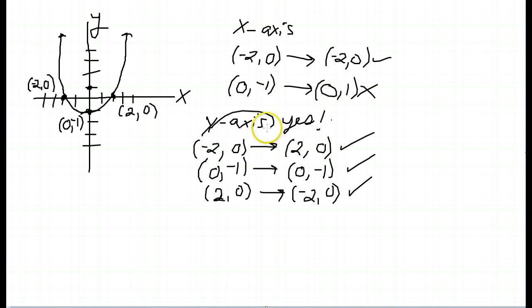Now, testing with respect to the origin. We just change the sign of both x- and y-coordinates. So, we start with our negative 2, 0. If I change the sign of both coordinates, we have 2, 0, and that one checks out.